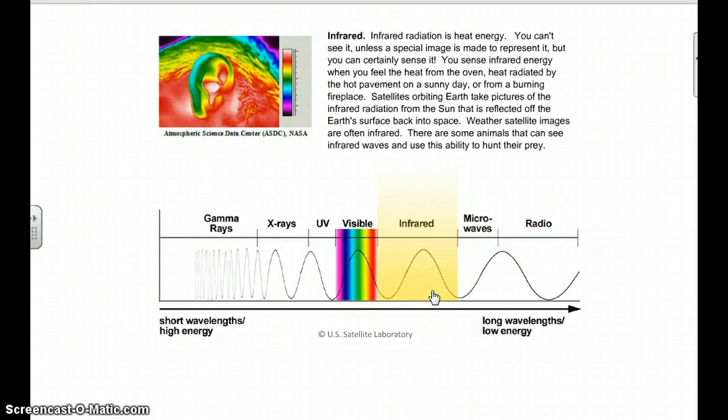As we get moving farther on, we have infrared. This is heat energy. This one allows us to see things that are giving off heat, heat from an oven, heat from the hot pavement, heat from the fireplace. Satellites can use infrared to measure areas on the surface of the earth that are warm. Some animals use infrared waves to help them with their hunting.